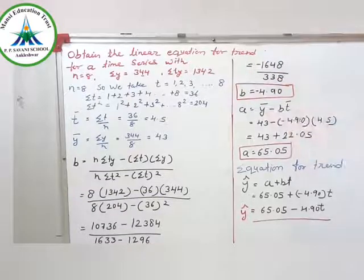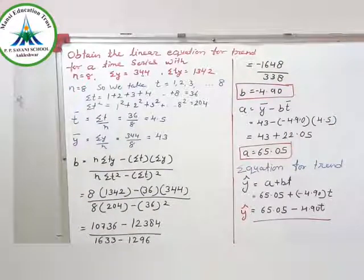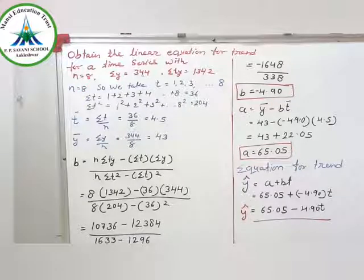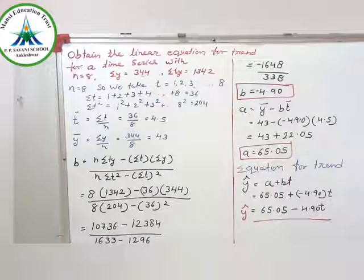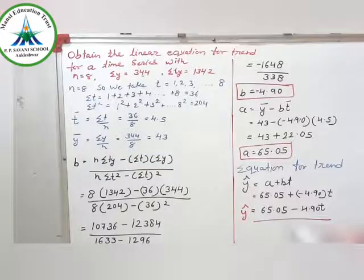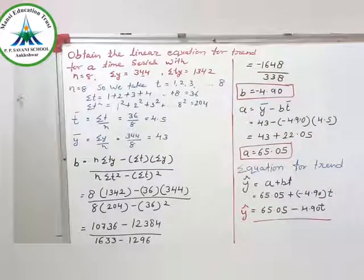For example, obtain the linear equation for trend for a time series with n equal to 8. n equal to 8 is given. Sigma y equal to 344, and sigma ty equal to 1342. Here you have n given, sigma y given, and sigma ty given.